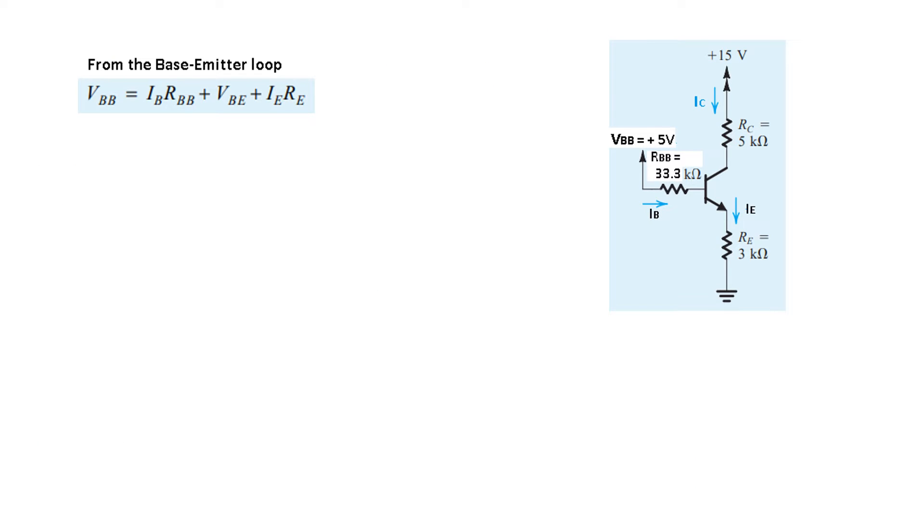Now, looking at the base-emitter loop, we can say that Vbb = Ib*Rbb + Vbe + Ie*Re. Taking this on the left-hand side gives us our equation. Assuming active mode, Ie = (β+1)*Ib, so Ib = Ie/(β+1).